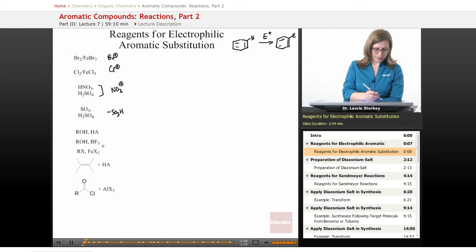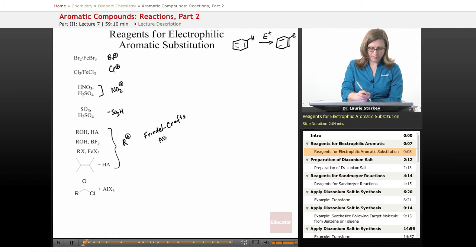And all of these various methods are ways of generating carbocations. If you have a carbocation, you could do a reaction called a Friedel-Crafts alkylation reaction, in which you add an alkyl group.